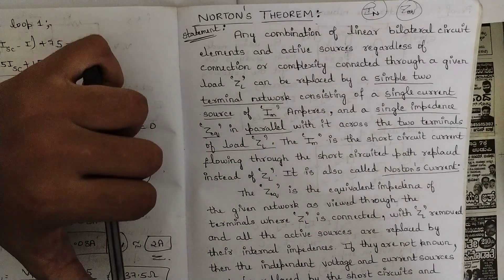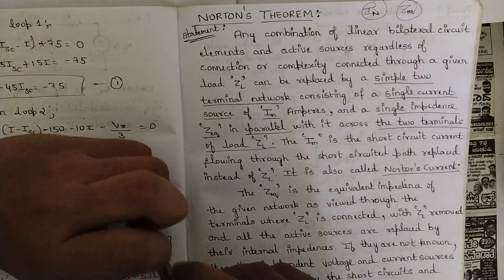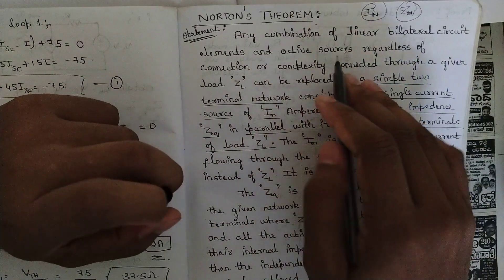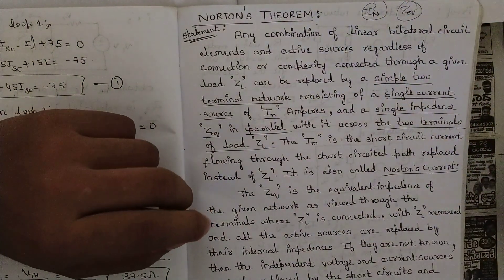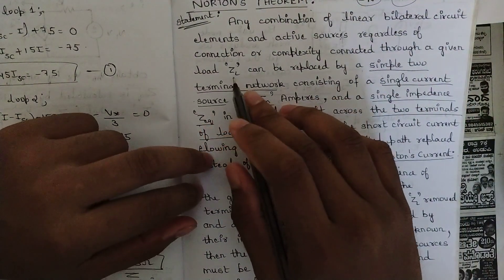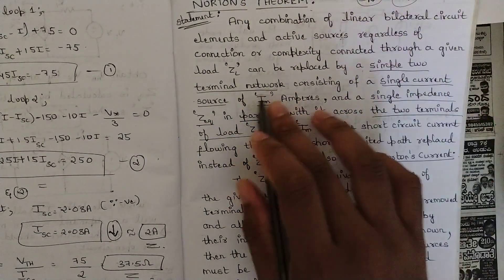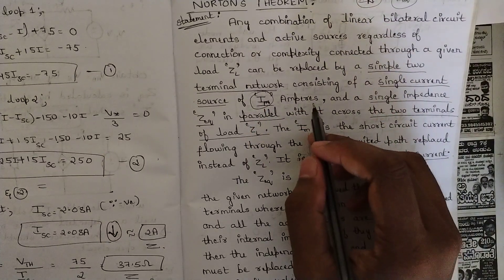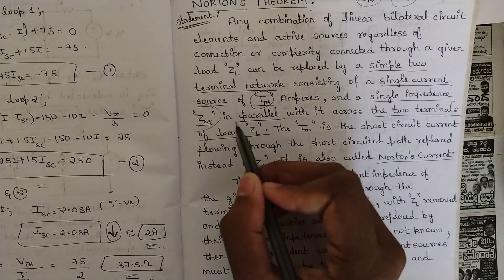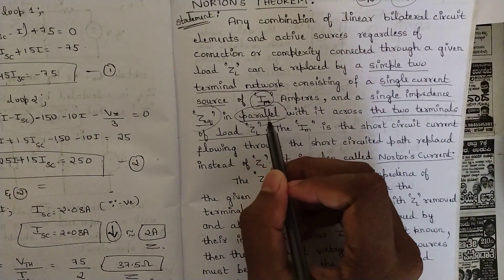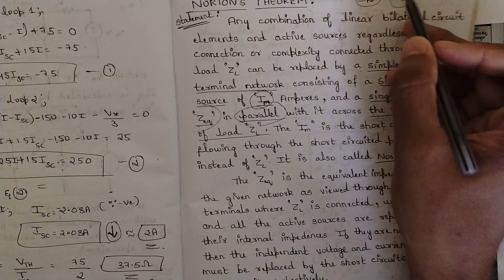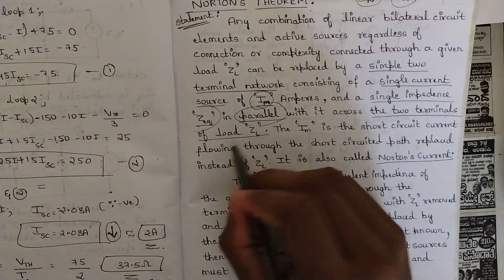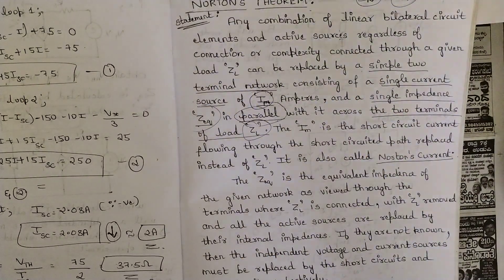The statement of Norton's theorem says: any combination of linear bilateral circuit elements and active sources, regardless of connection or complexity, connected through a given load impedance ZL, can be replaced by a simple two-terminal network consisting of a single current source IN (the Norton current, in amperes) and a single impedance Z equivalent connected in parallel — or in shunt — across the two terminals of the load impedance ZL.